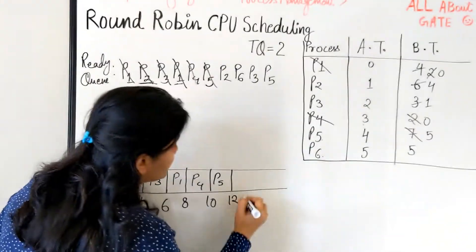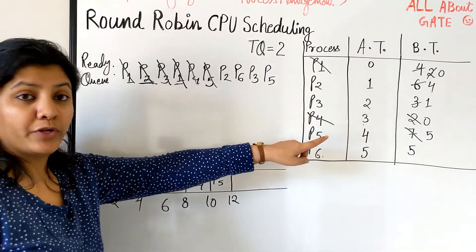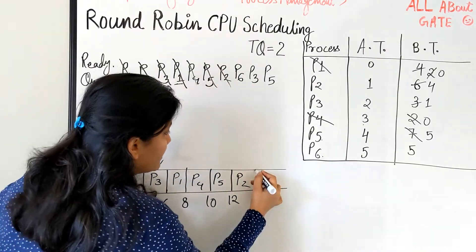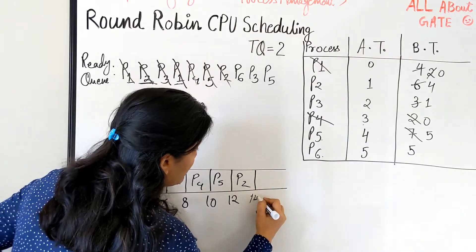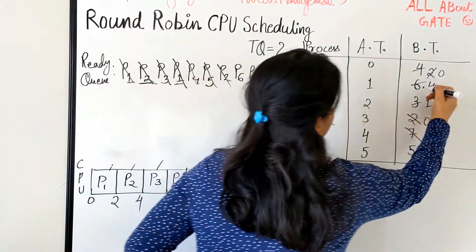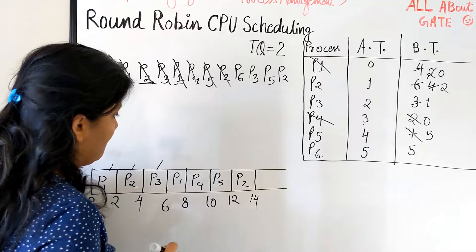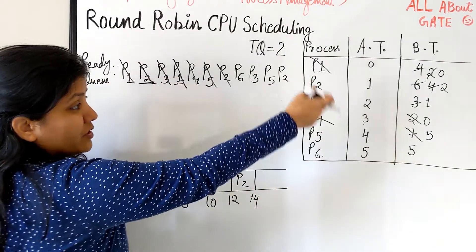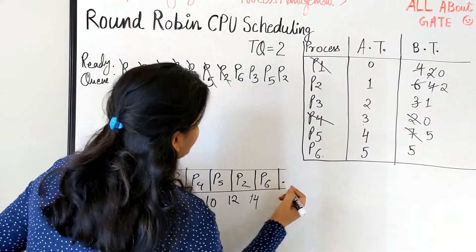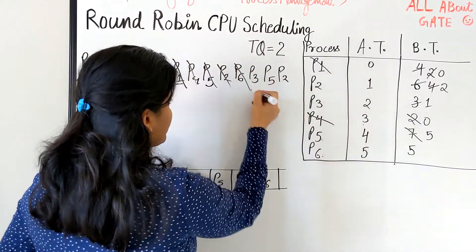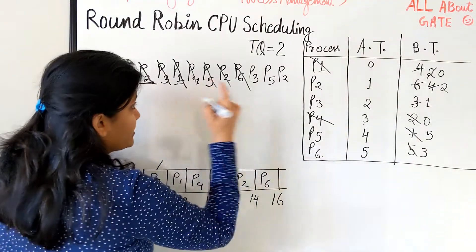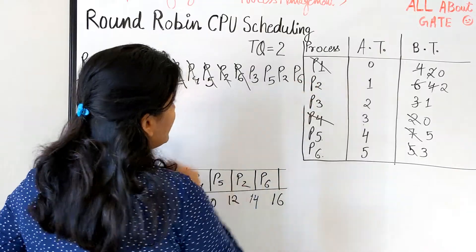P5 runs from 10 to 12, needing five burst units total, so it goes back in the ready queue. Next is P2 — it needs 4 more but we give 2, so 12 to 14; it goes back. Now P6 gets a chance: P6 needs five burst units and is running for the first time, so 14 plus 2 is 16, leaving 3 remaining. P6 goes back to the queue.